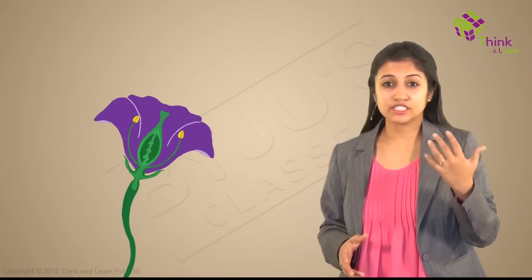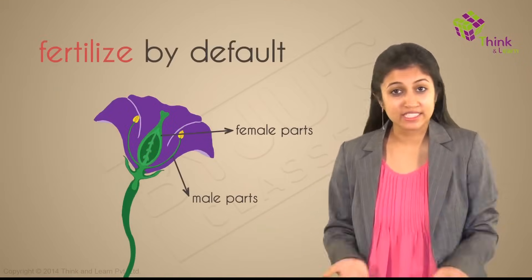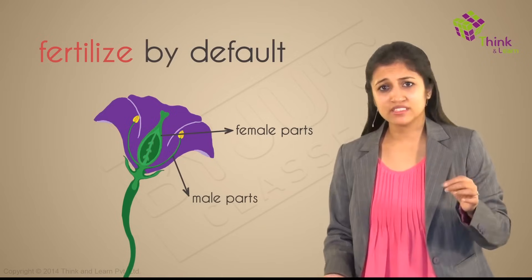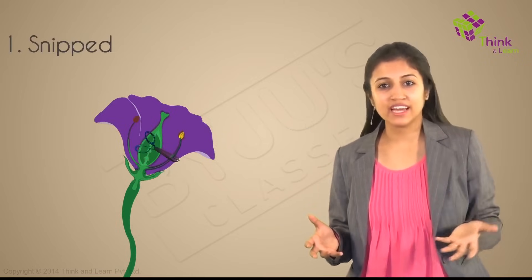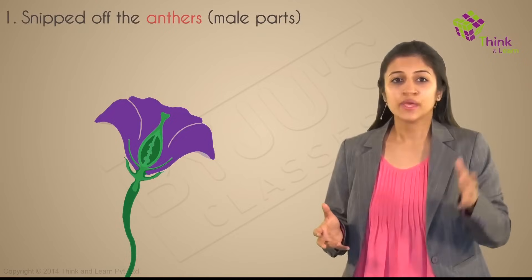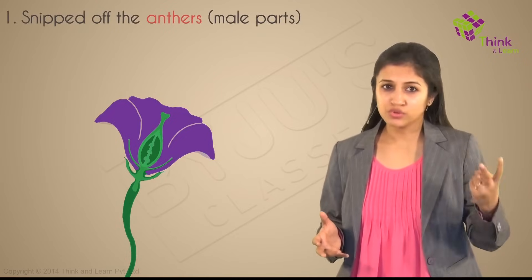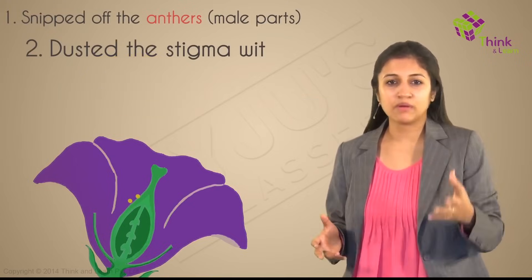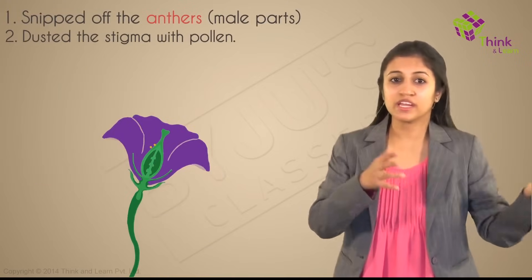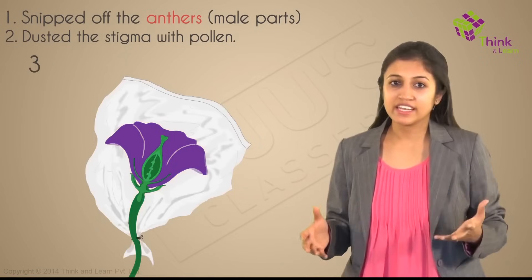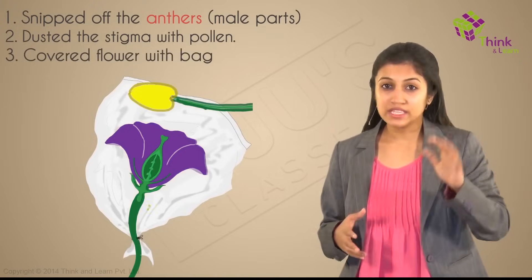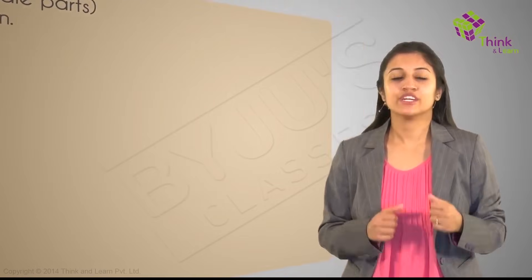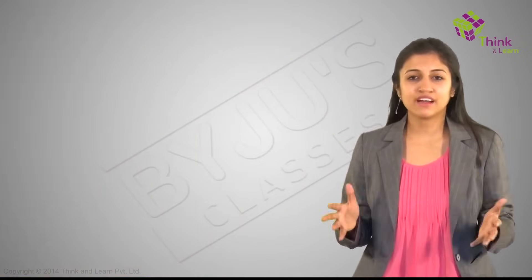Since every pea flower has both male and female parts, by default they would fertilize themselves. So Mendel practiced some family planning on them and set about creating hybrid varieties. First, he snipped off the anthers — that's the male part of the flower that produces pollen — while still immature. Then he dusted the stigma, that is the female part, with pollen taken from the desired plant. Finally, he tied bags over the flowers to keep out any stray pollen. This way, the monk was playing God and controlling the parentage of each generation.